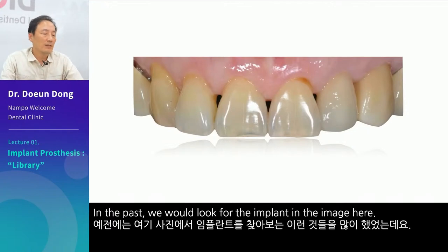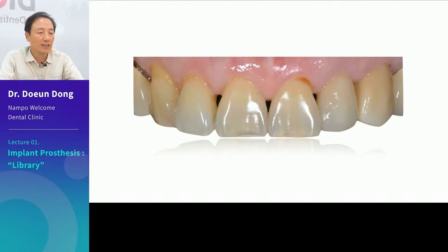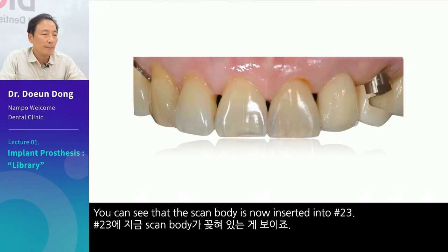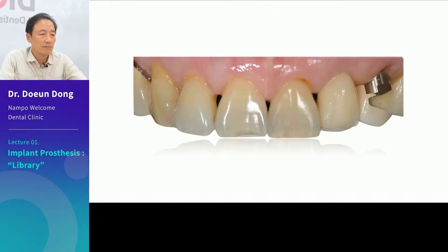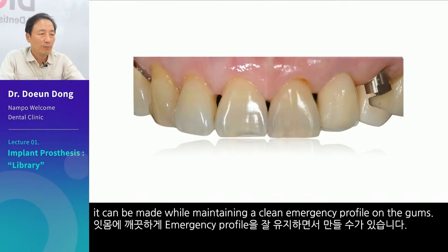In the past, we would look for the implant in the image. You can see that the scan body is now inserted into number 23. By inserting the scan body, it can be made while maintaining a clean emergency profile on the gums.